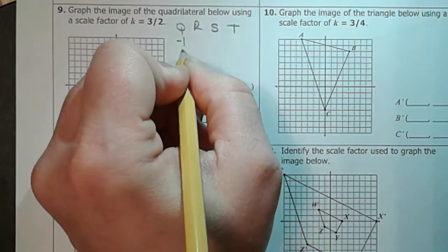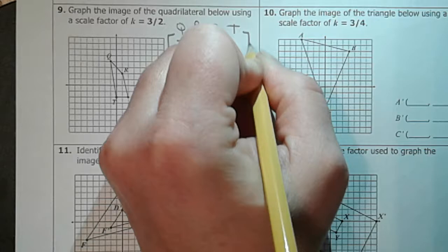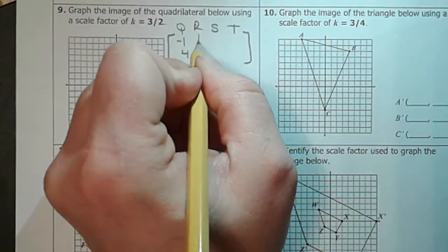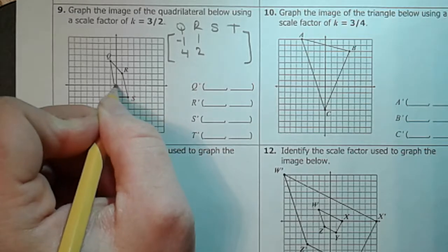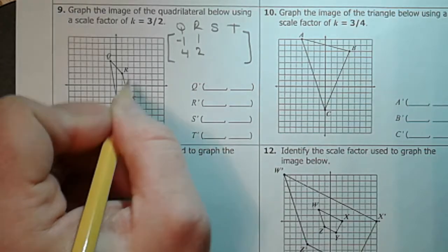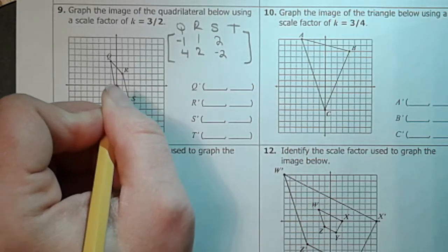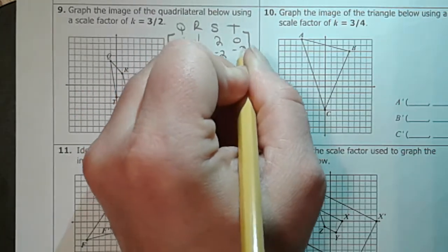So Q is at negative one, four. Okay now R is at one, two. S is at two, negative two. And T is at zero, negative two.